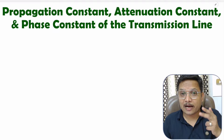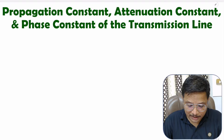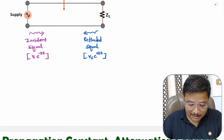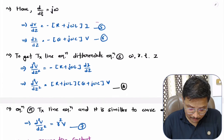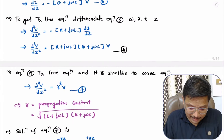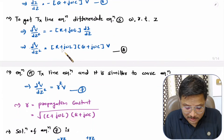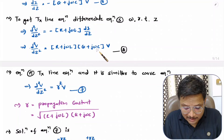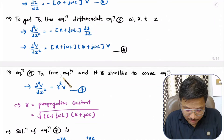In my last video, I have derived transmission line equations. In that, I have derived the transmission line equation: d²v/dz² = (R + jωL)(G + jωC)·v. And this is similar to the wave equation.